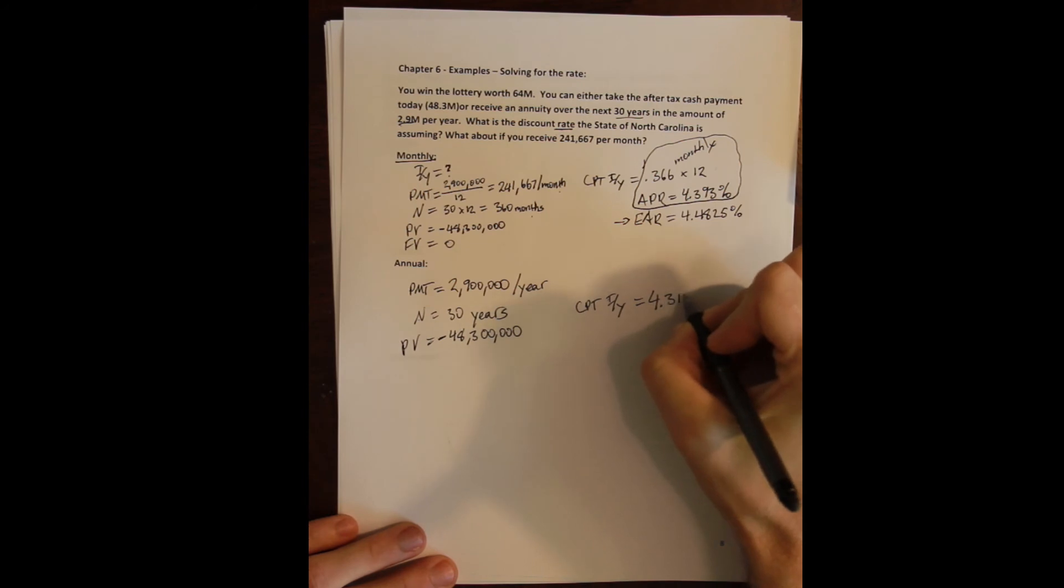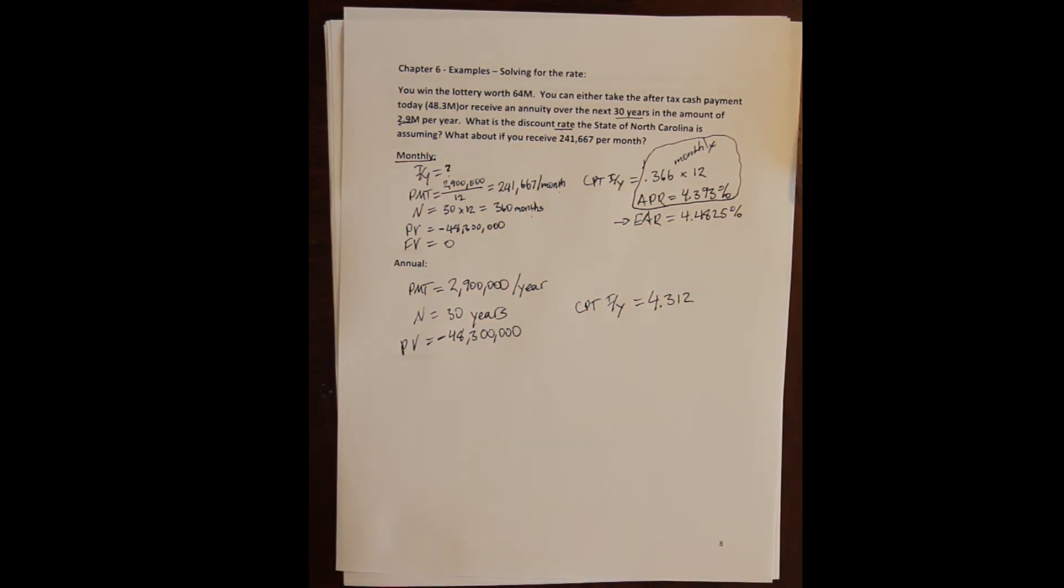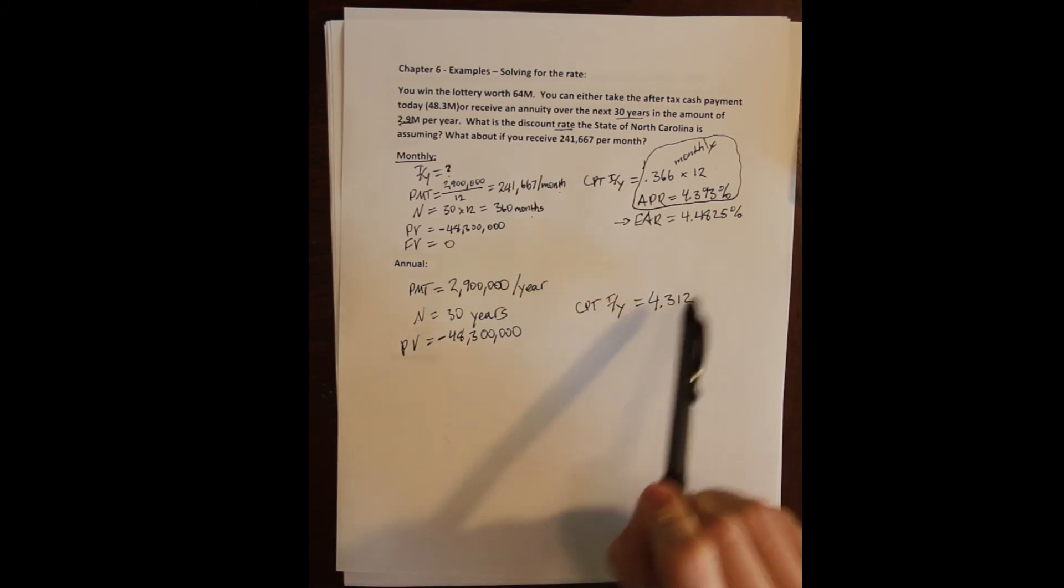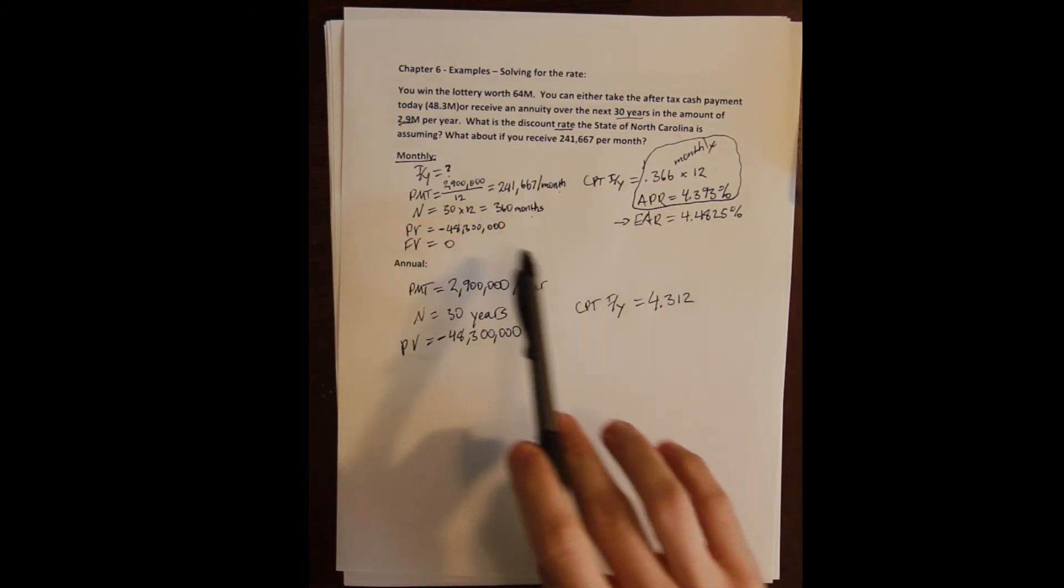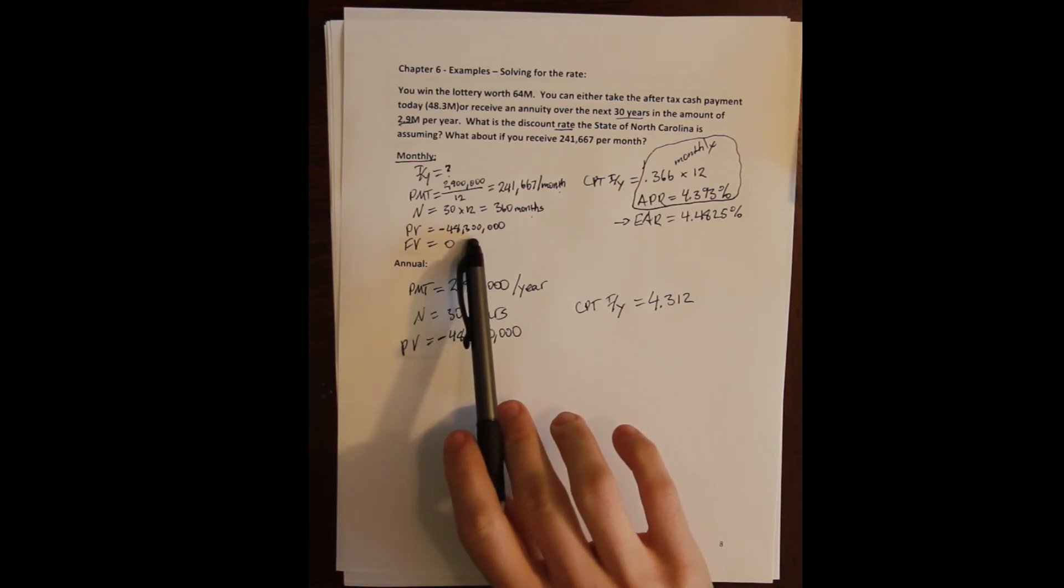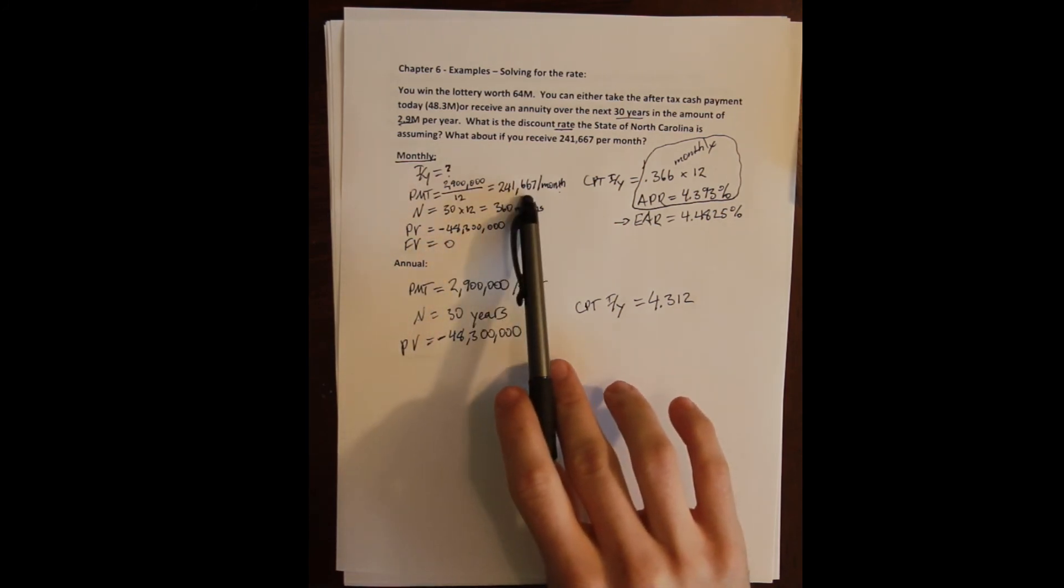So again, we notice that we'd be earning a slightly higher rate at a monthly compounding period. But effectively, when we're talking about a lottery, the choice that you really need to make—if you ever win the lottery, of course, you can feel free to give me a call and ask my advice, but for a nominal fee of course—but what you're effectively being asked to choose is whether you'd rather take the lump sum payment now or whether you take the annuity.